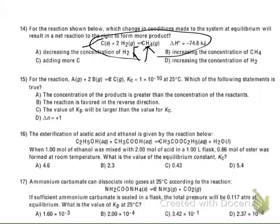Let's check the conditions. Option A: decreasing the concentration. If you try to decrease the concentration of hydrogen, the chemical reaction will shift from right to left — basically going this way.